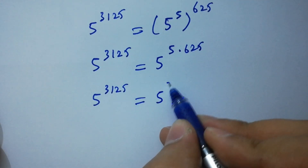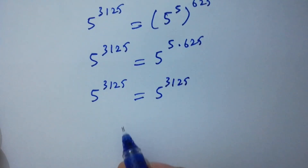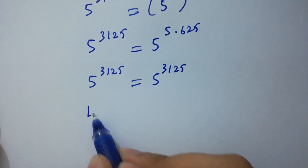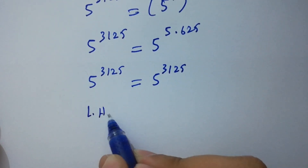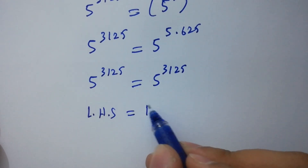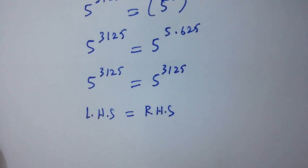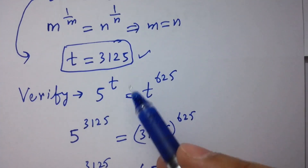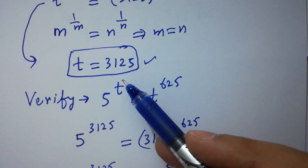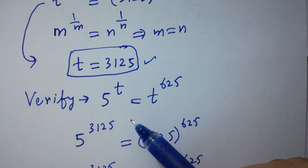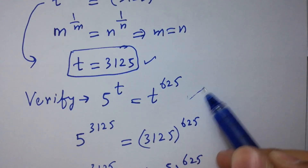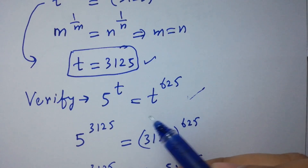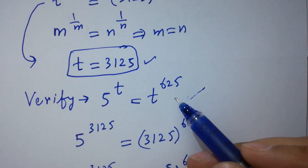We have 5 times 625 equals 3125. You can see the base and powers are the same, so left hand side equals right hand side, which shows that the value of t equal to 3125 satisfies the equation 5 to the power t equals t to the power 625.